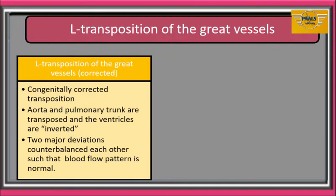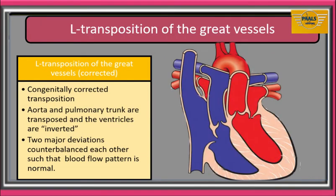L-transposition of the great vessels is also called congenitally corrected transposition. Here, the aorta and pulmonary trunk are transposed and the ventricles are inverted such that the anatomical right ventricle lies on the left side and opens into the aorta, and the anatomical left ventricle lies on the right side and opens into the pulmonary artery.